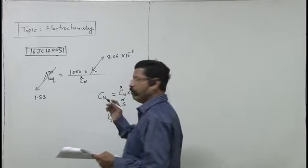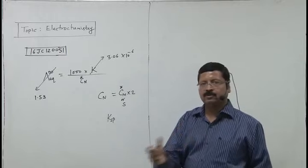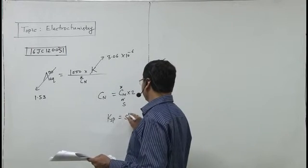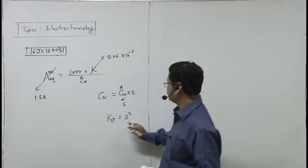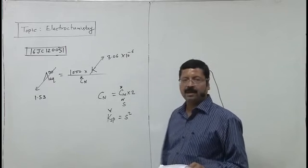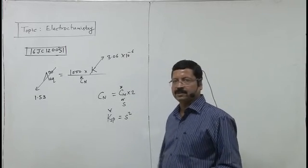BaSO4 is an AB type sparingly soluble salt, so Ksp will be s squared. In the third step, knowing s from the previous step, we'll calculate Ksp. This will give us the answer.